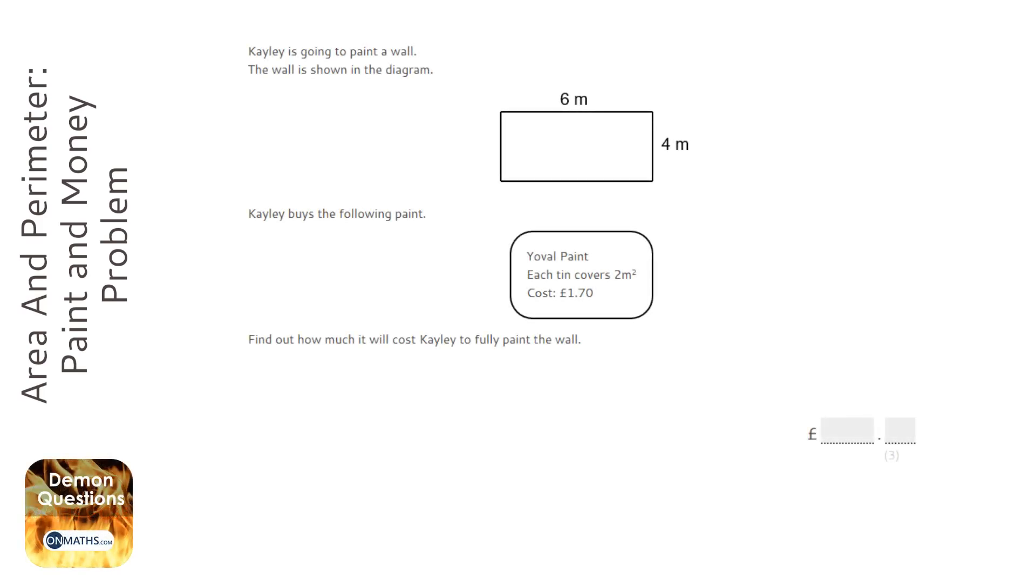Okay, so this question says that Cayley is painting a wall. It shows us the dimensions of the wall, which is 6 metres by 4 metres, and it shows us each tin of paint covers 2 metres squared and costs £1.70.